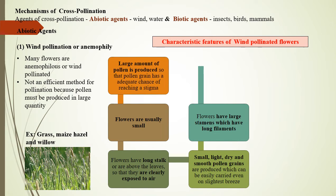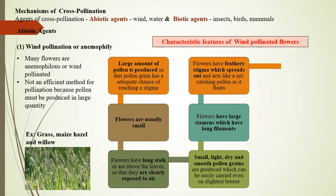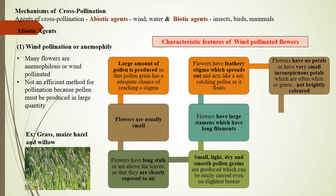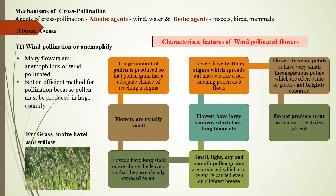Wind-pollinated flowers have large stamens with long filaments so that they hang well outside the flower and can sway and shake out pollen in the lightest breeze. They have feathery stigmas that spread out and act like a net, catching pollen as it floats through air. Flowers have no petals or very small inconspicuous petals which are often white or green, and do not produce scent or nectar — nectaries are absent altogether.